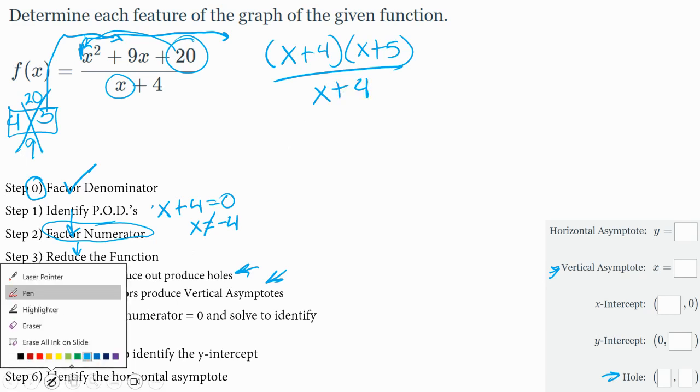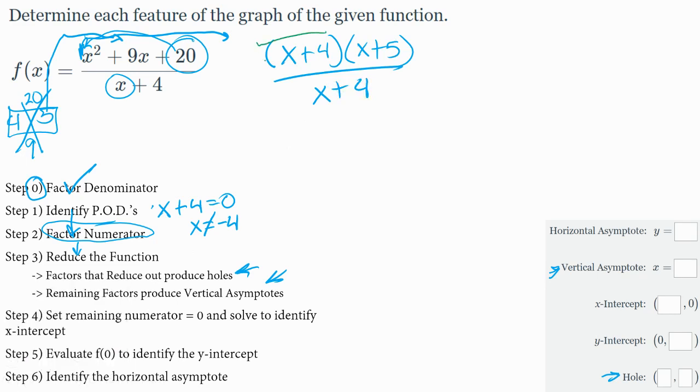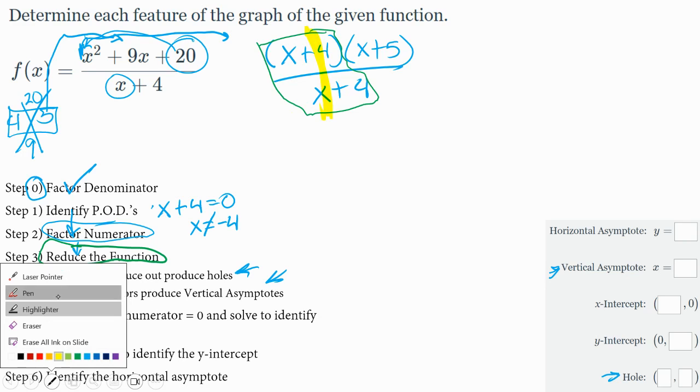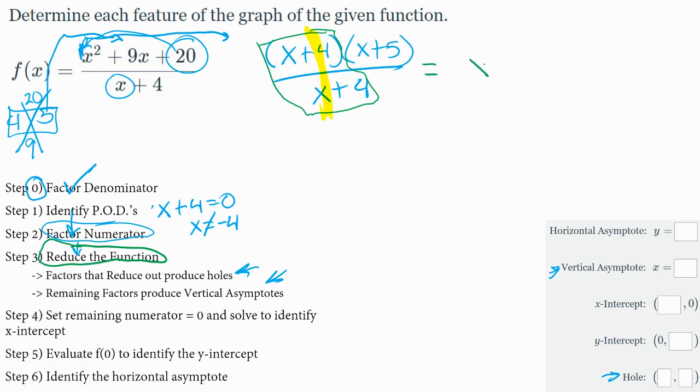And the bottom is x plus 4. And hopefully your eyes very quickly see x plus 4 is on the top and the bottom, which is the next step. I need to reduce that function by any vertical factor that's over top itself. You divide, anything divided by itself is 1. So reducing the function will turn out to be just x plus 5, a linear function.